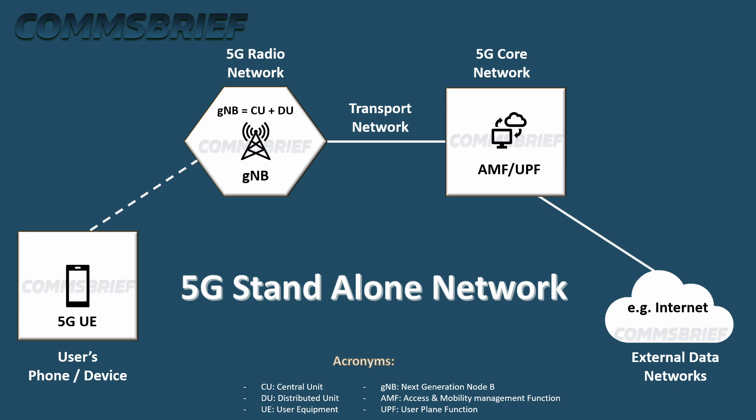The central unit deals with non-real-time functions and works with the higher layers of the network protocol stack, whereas the distribution unit works with the lower layers, for example the physical layer, MAC, and RLC. The DU is closer to the site, whereas the CU, as the name suggests, can be at a central location. This split allows bringing the DU closer to the location of phone users, which can be crucial in use cases like edge computing.